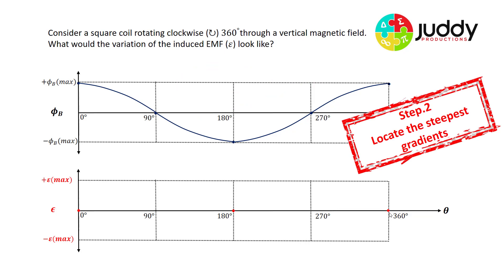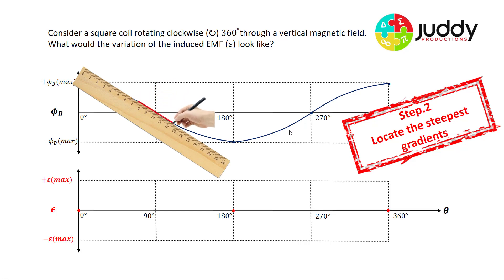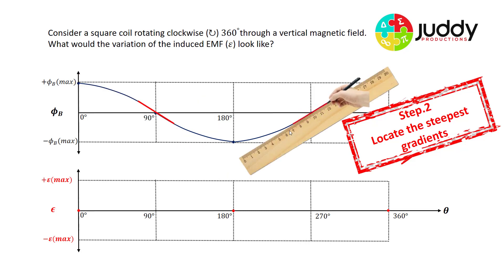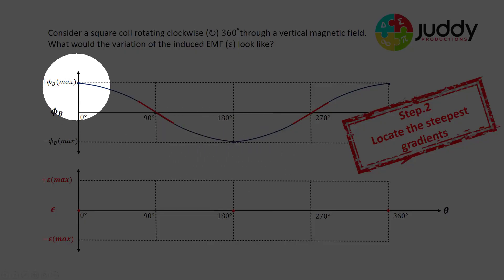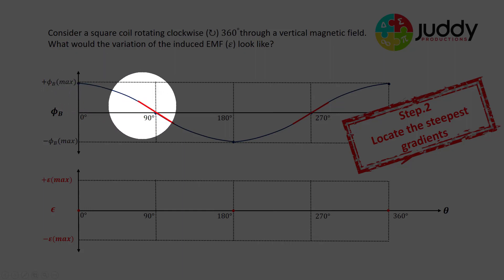Step two: locate the steepest gradients. Looking at the variation of flux versus angle graph, there is a negative steepest gradient at the 90 degree mark and a steepest positive gradient at the 270 degree mark. We start at a zero gradient which increases to a steepest negative point at 90 degrees.